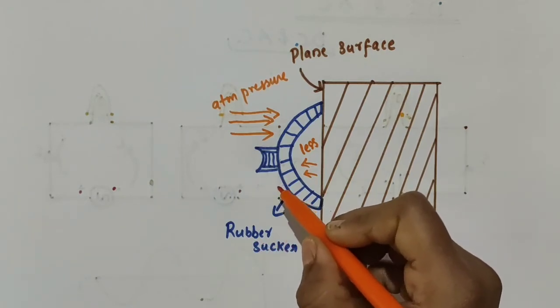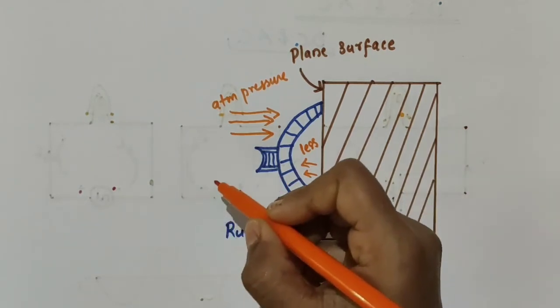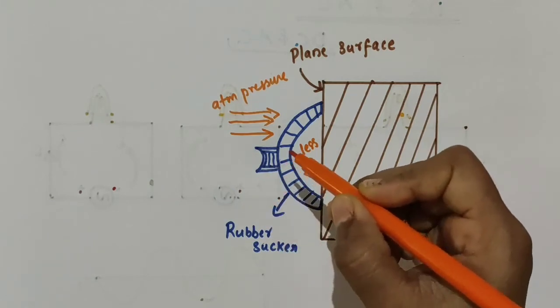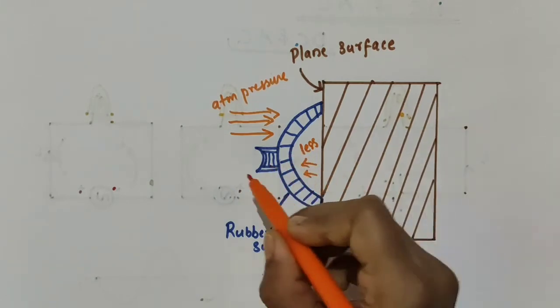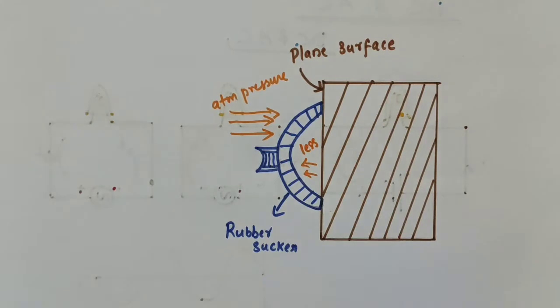The pressure in this region will be less compared to the atmospheric pressure acting on it. So to pull the sucker off the surface, we have to apply a force which is large enough to overcome this atmospheric pressure.